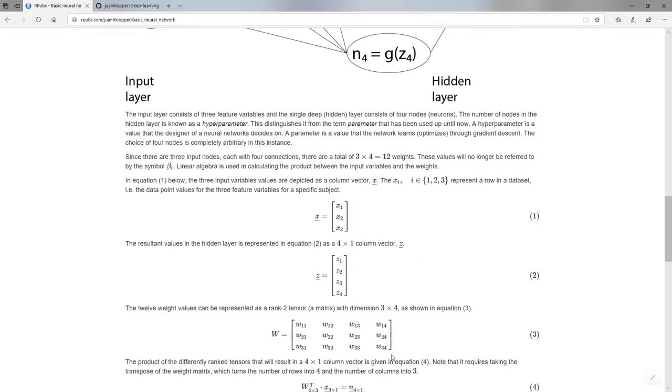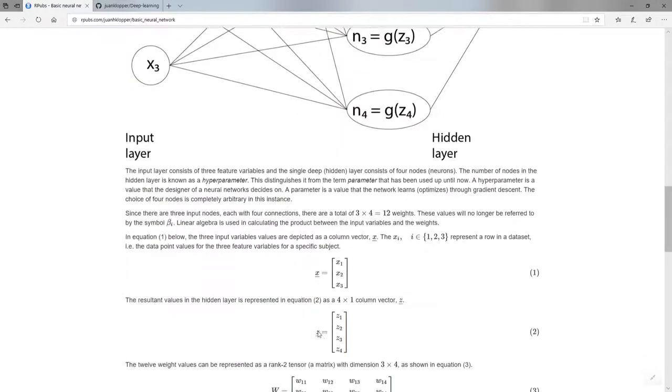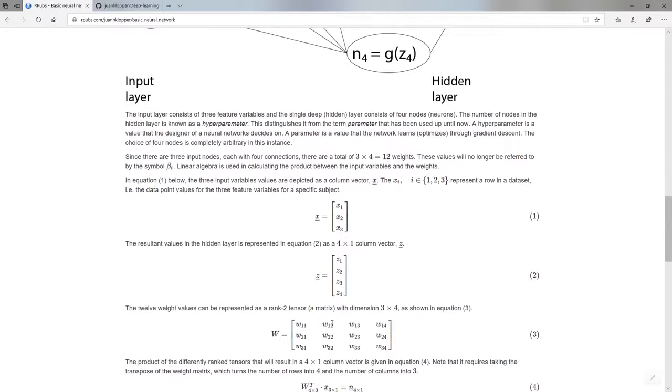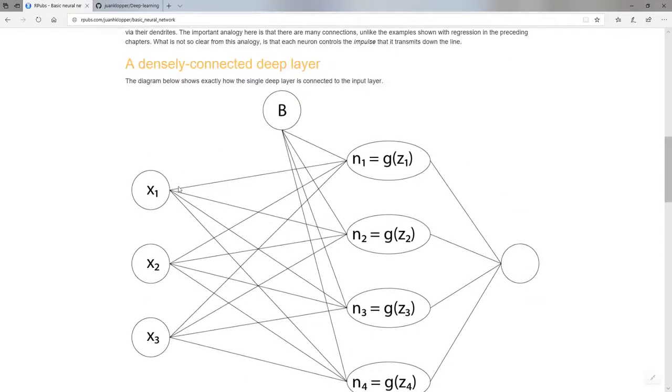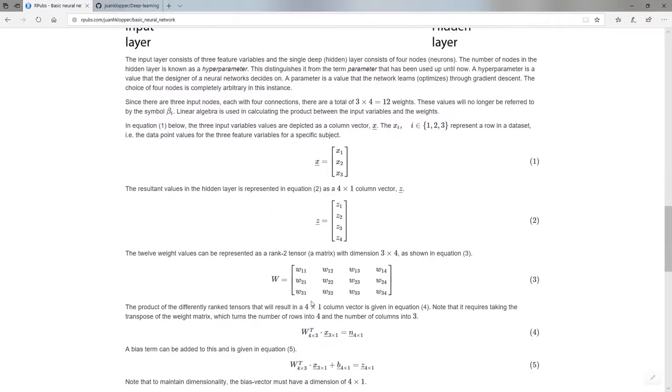And if you look at this W sub 1, 1, W sub 1, 2, if we look at node 1, it has 1, 2, 3, 4 values coming out of it. And there we have 1, 2, let's just look at the first row there, 1, 2, 3, 4 values coming out of it.